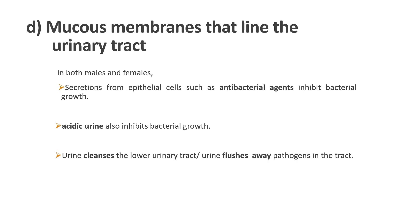Have you ever heard about UTI? UTI is the urinary tract infection. UTI may be caused by several bacteria, but 90% of UTI incidents are caused by a bacteria called E. coli. In both males and females, the urinary tract is protected by secretions from epithelial cells which act as antibacterial agents that inhibit bacterial growth. The acidic urine also inhibits bacterial growth while cleansing the lower urinary tract and flushing away pathogens.